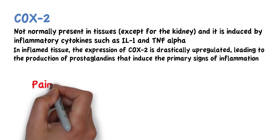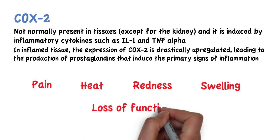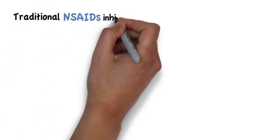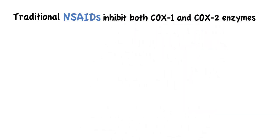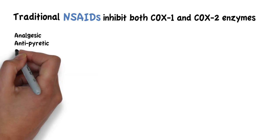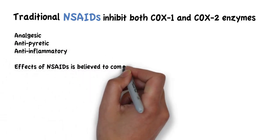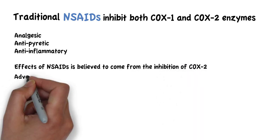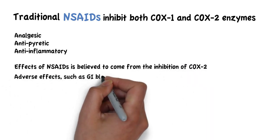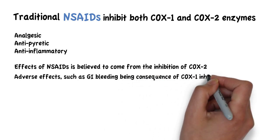These primary signs of inflammation being pain, heat, redness, swelling, and loss of function. Traditional NSAIDs inhibit both COX-1 and COX-2 enzymes. The analgesic, antipyretic, and anti-inflammatory effects of NSAIDs are believed to come from the inhibition of COX-2, with the adverse effects — such as gastrointestinal bleeding — being a consequence of COX-1 inhibition.